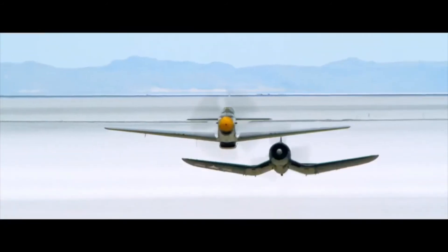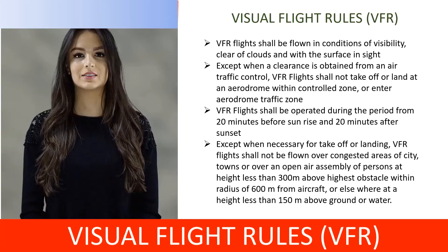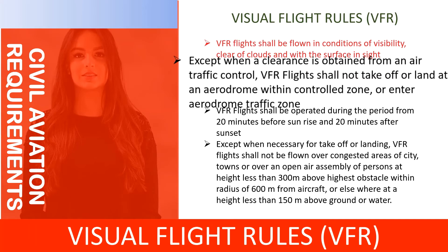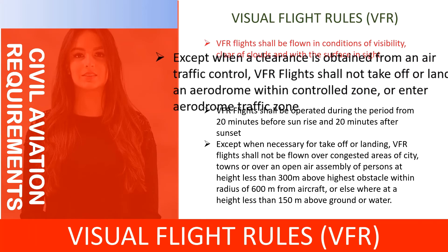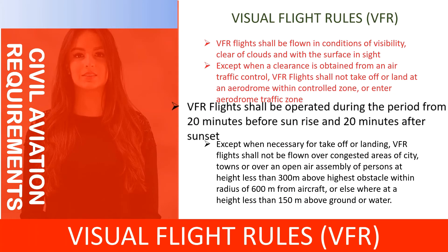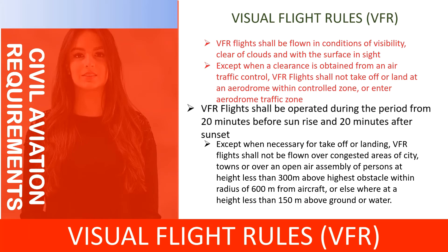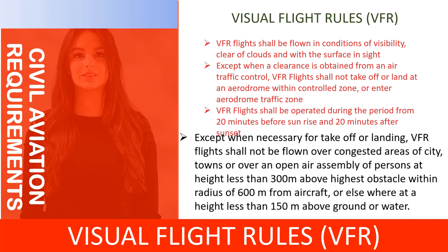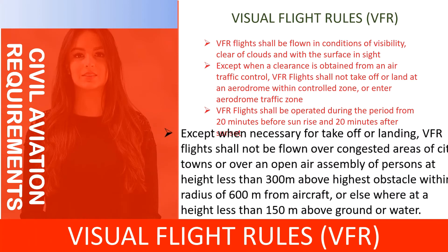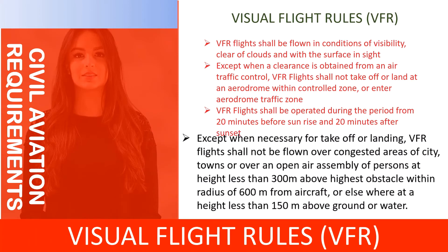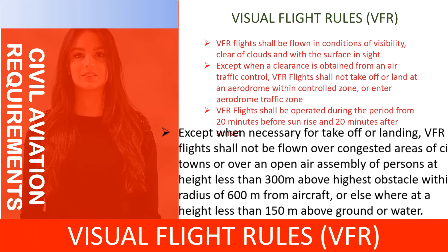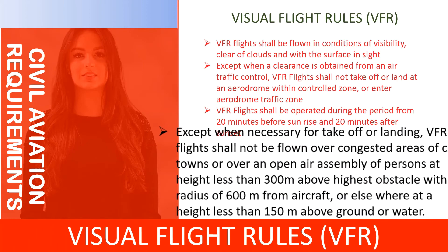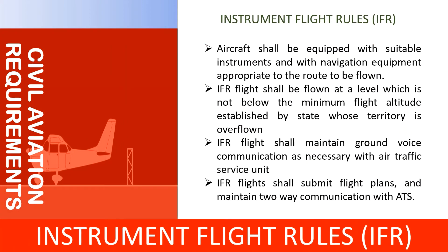Visual Flight Rules (VFR): VFR flights shall be flown in conditions of visibility, clear of clouds and with the surface in sight. Except when clearance is obtained from ATC, VFR flights shall not take off or land at an aerodrome within a controlled zone, or enter an aerodrome traffic zone. VFR flights shall be operated during the period from 20 minutes before sunrise to 20 minutes after sunset. Except when necessary for take-off or landing, VFR flights shall not be flown over congested areas of cities or towns, or over an open-air assembly of persons at a height less than 300 metres above the highest obstacle within a radius of 600 metres from the aircraft, or elsewhere at a height less than 150 metres above ground or water.